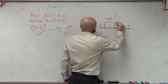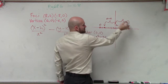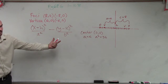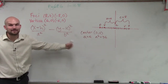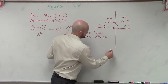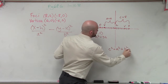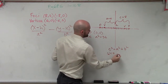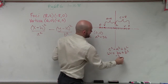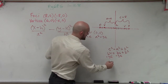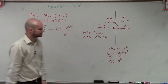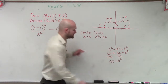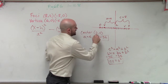We know what c is, because c is the distance from the center to the foci. So c in this case equals 8. But the problem is c is not in the formula. We have to apply the relationship: how do a, b, and c relate to each other for a hyperbola? c squared equals a squared plus b squared. So 64 equals 36 plus b squared. Subtract 36, and we get b squared equals 28.